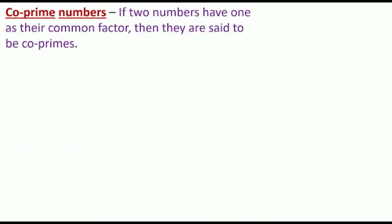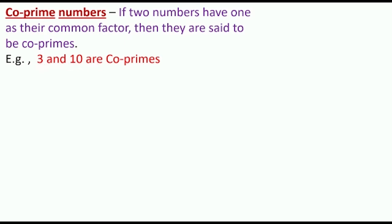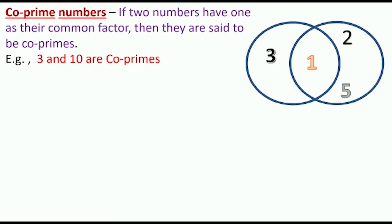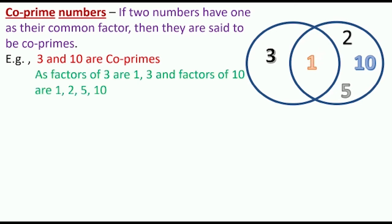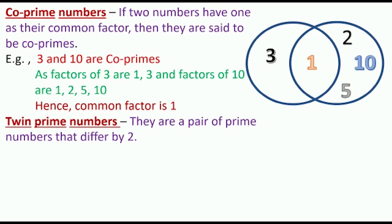Now, what are co-prime numbers? If two numbers have only 1 as their common factor, they are said to be co-prime numbers. For example, 3 and 10 are co-primes. The factors of 3 are 1 and 3, and the factors of 10 are 1, 2, 5, and 10. The common factor is only 1, so 3 and 10 are co-prime numbers.